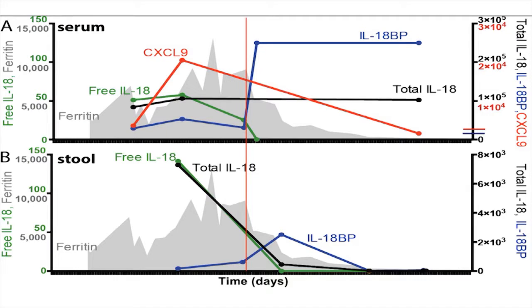We can measure biomarkers. CXCL9 is a biomarker of interferon gamma activity, which is probably important in NLRC4, and you can see that went down with treatment. The patient's free IL-18 levels went down with treatment. This demonstrates that the recombinant IL-18 binding protein could be measured in the patient's serum, and you see similar changes in the stool as you do in the serum.